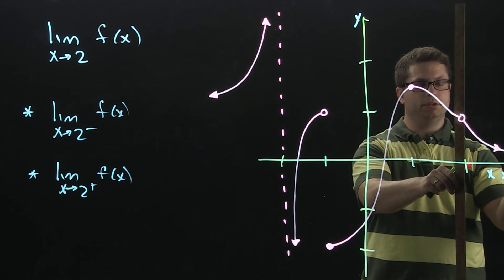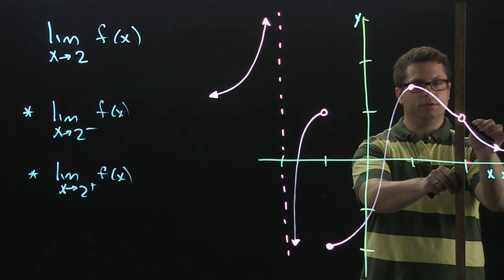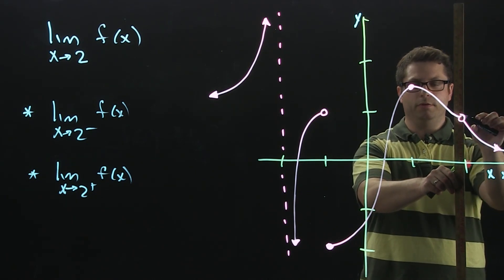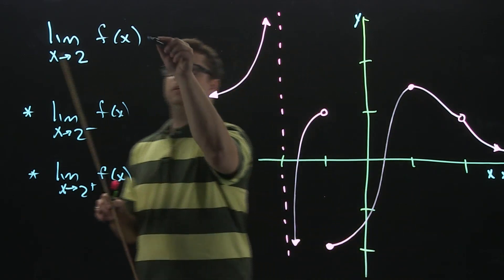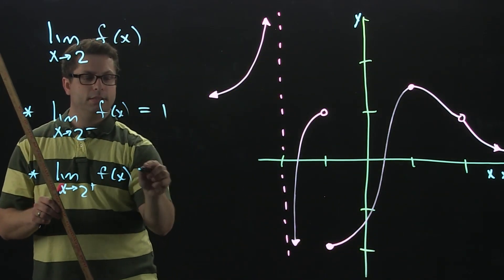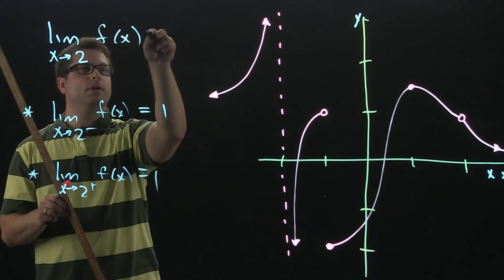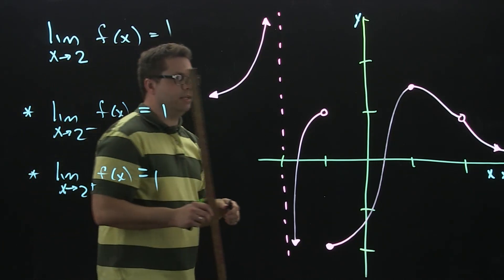In fact, if I approach 2 from the right-hand side, I am also approaching this y-value of 1. Both the left and right limits equal 1. I'm going to go ahead and say the general limit equals 1.